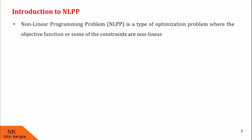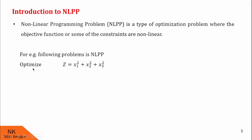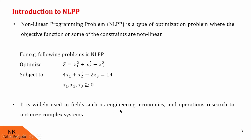NLPP is a type of optimization problem where the objective function or some of the constraints are non-linear. For example, the following problem is an NLPP: optimize z = x1² + x2² + x3², subject to the constraint 4x1 + x2² + 2x3 = 14, given that x1, x2, x3 are all non-negative. Note that here both the objective function and the constraint are of degree 2, so this problem is indeed non-linear. NLPPs are widely used in fields such as Engineering, Economics, and Operations Research to optimize complex systems.